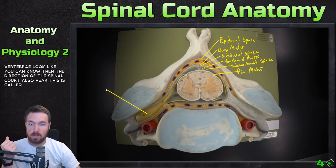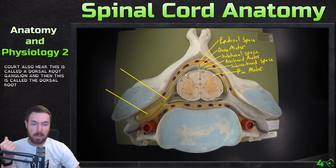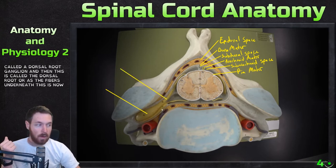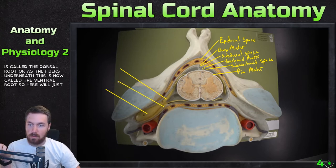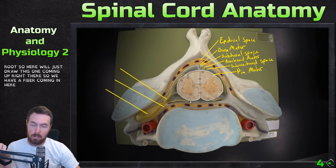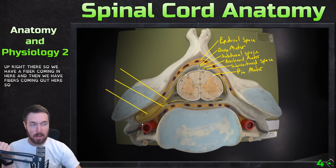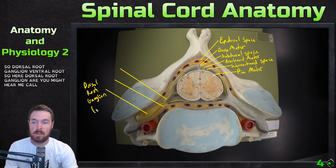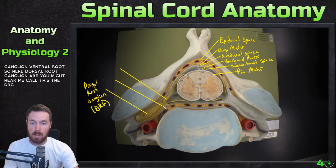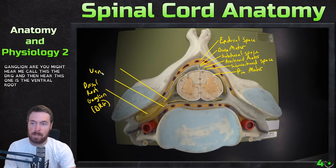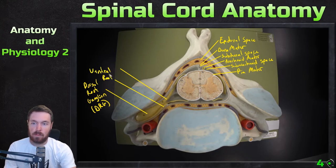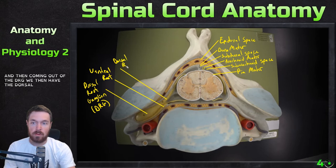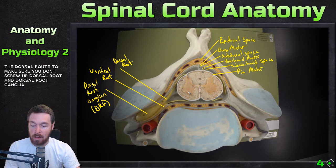This is called the dorsal root ganglion, and then this is called the dorsal root. Whereas the fibers underneath — this is called the ventral root. So we have a fiber coming in here and fibers coming out here. So dorsal root ganglion — you might hear me call this the DRG — and then here this one is the ventral root. And coming out of the DRG, we then have the dorsal root. So make sure you don't mix up dorsal root and dorsal root ganglion; they are different things.